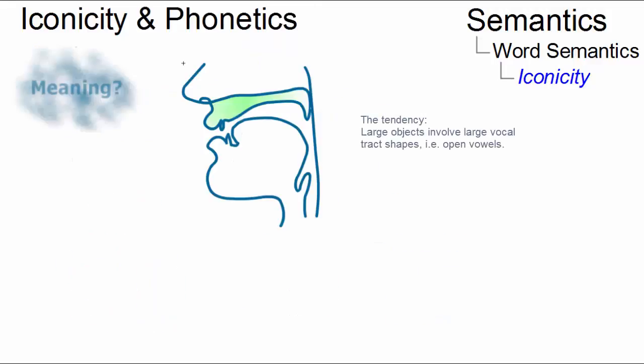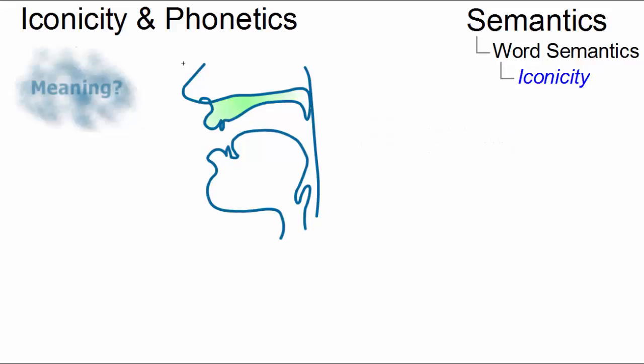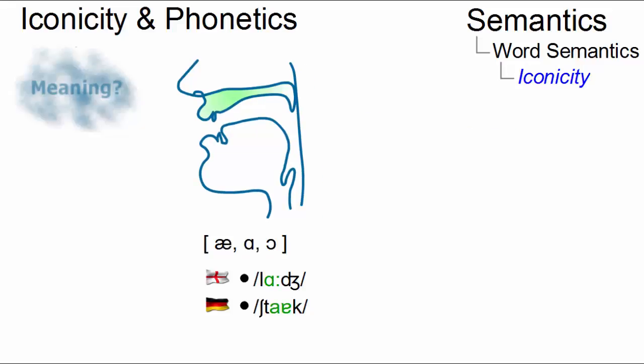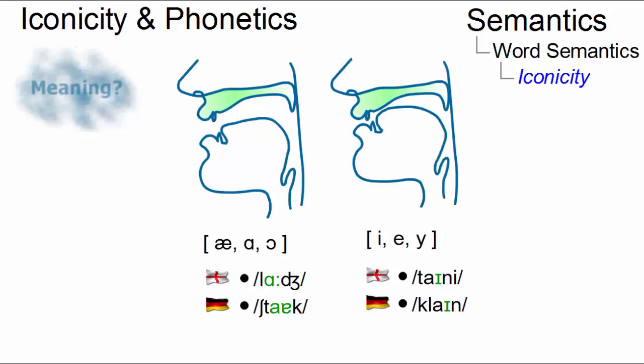In phonetics, for example, vowel magnitude relationships suggest that the larger the object, the more likely it is to involve open vowels, for example, a, a, or o, in words like large or German stark, whereas smaller objects are more likely to involve a closed vowel such as e in tiny or German klein.